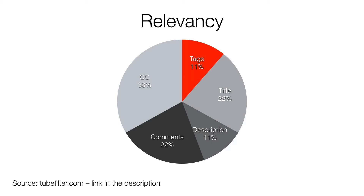The pie chart shows how important each part is for relevancy. I took this data from a study by tubefilter.com — the link is in the description, it's a great read. As you can see, tags are actually not too important. Unfortunately, it's a common misconception that tags will do magic. Nonetheless, of course, it's a good idea to get them right.